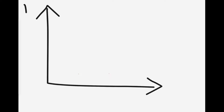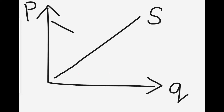Supply and demand is a graph where the vertical axis represents the price and the horizontal axis represents the quantity. Supply goes up and demand goes down. Supply is the relationship between prices and quantities that sellers want to sell, and demand is the relationship between prices and quantities that buyers want to buy.